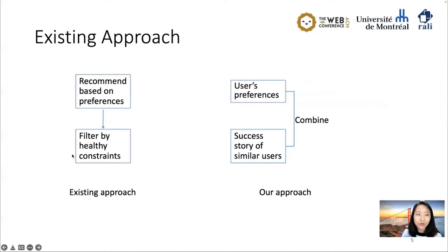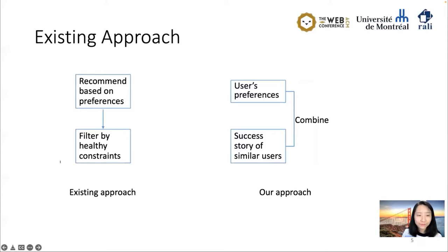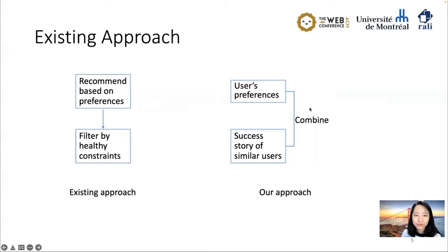The existing approach for the third type of recommendation first gets a recommended list based only on user preferences, without considering any health constraints. Then it adds a filter to remove food that doesn't satisfy health constraints — for example, deleting food with calories higher than a certain value. For our approach, we try to combine the user's preferences with similar users' successful stories, which we'll explain in detail later.